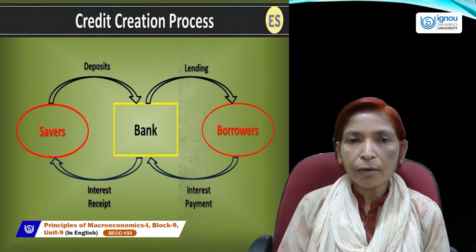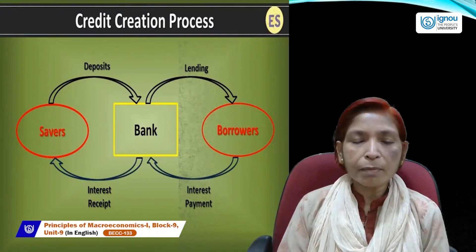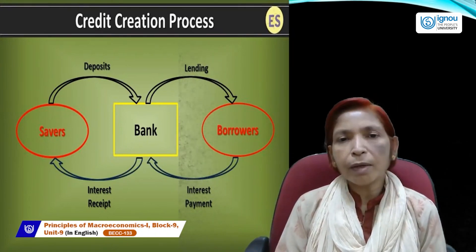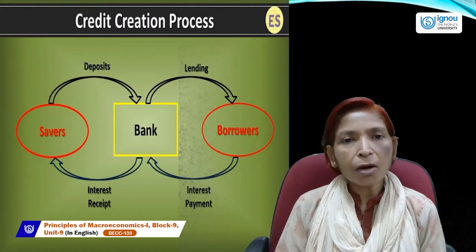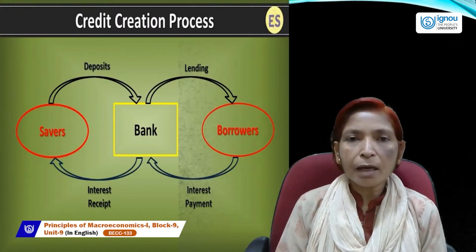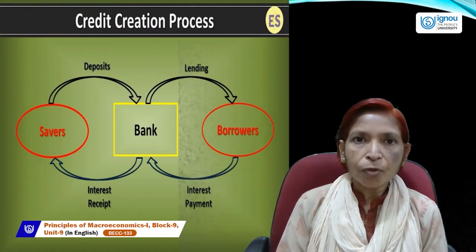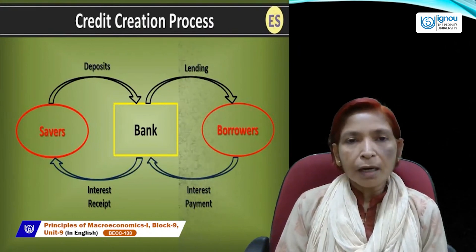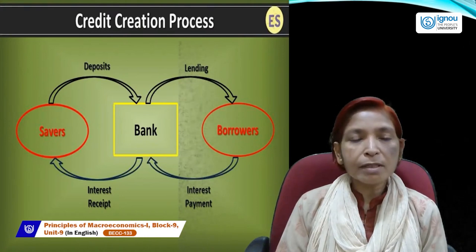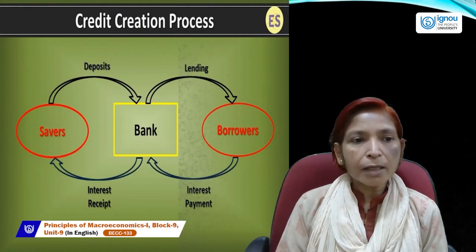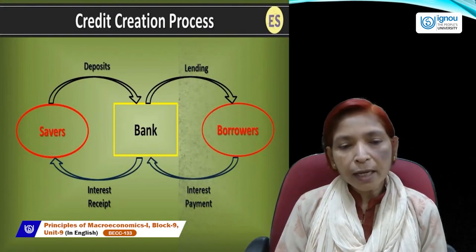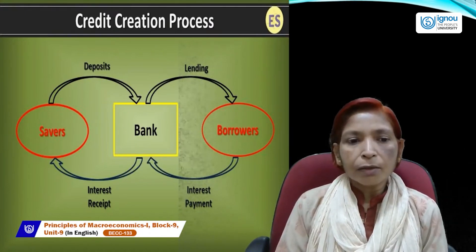Examples of commercial banks include State Bank, Punjab National Bank, Bank of Baroda, Bank of Maharashtra, Allahabad Bank, and others — whether private, public, or foreign banks that deal with the public. People save their money as deposits in commercial banks, and borrowers take money through bank loans. Savers receive interest on their deposits, while borrowers pay interest to the bank.